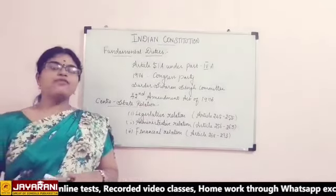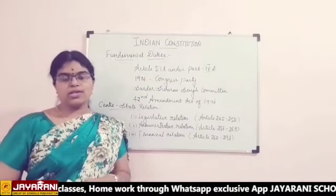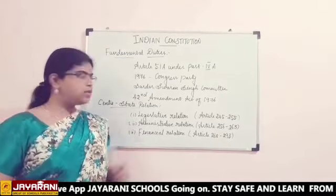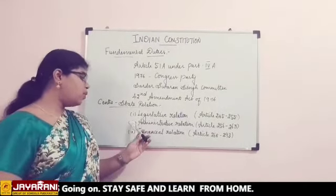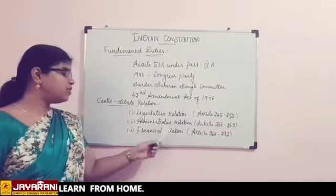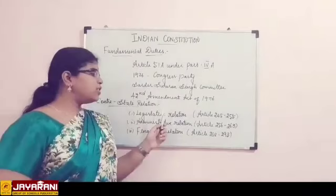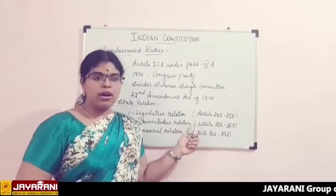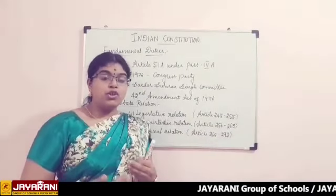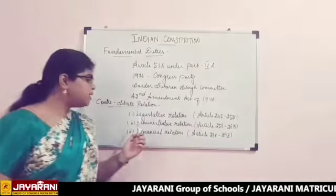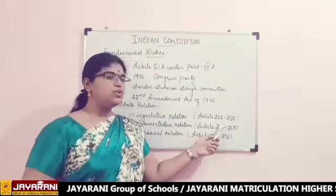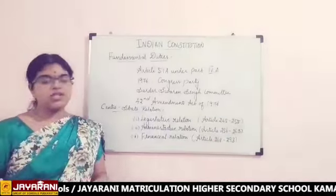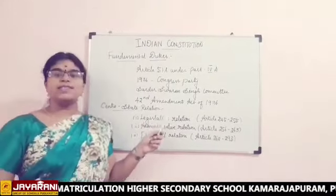Next, centre-state relations. The constitution of India, being federal in structure, divides the power of the central government and state governments under three heads: Number 1, Legislative relations. Number 2, Administrative relations. Number 3, Financial relations. Legislative relations under articles 245 to 255 deal with the power of parliament and state legislatures to formulate laws for the whole nation. Administrative relations under articles 256 to 263 deal with the implementation of laws already made by the parliament and state legislatures.